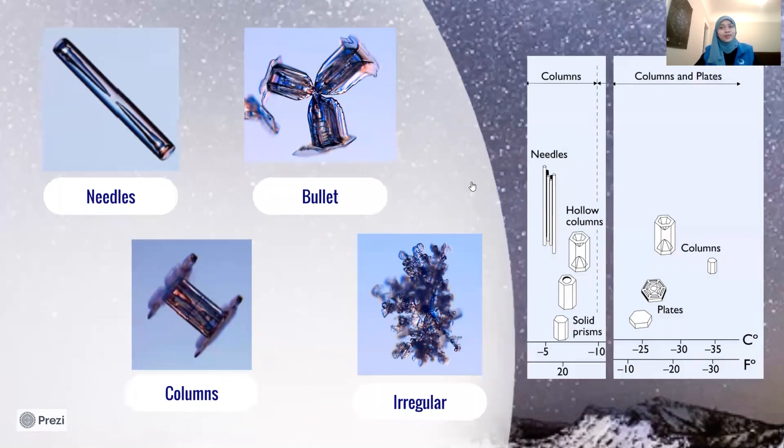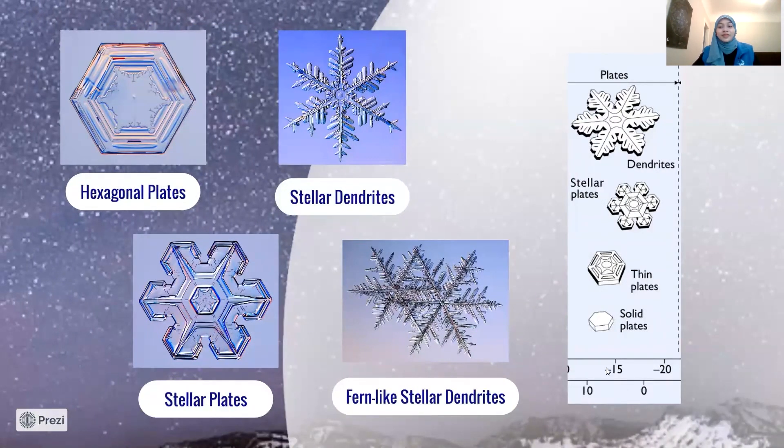And when the temperature gets even colder, say around minus 15 to minus 20 degrees Celsius, or around 10 degrees to 0 degrees Fahrenheit, we get these beautiful shapes of snowflake patterns. And these shapes are probably what you would think about when you hear the word snowflakes.